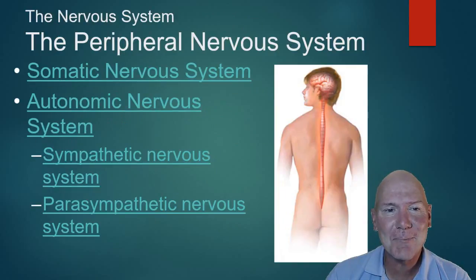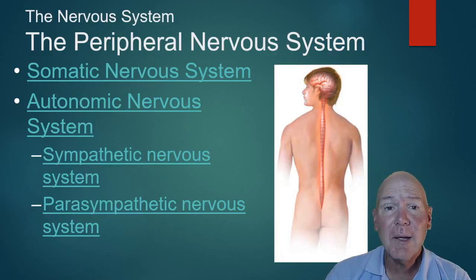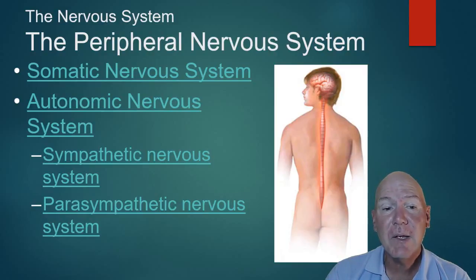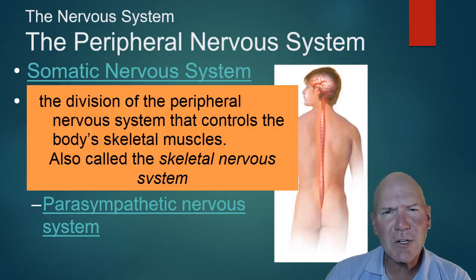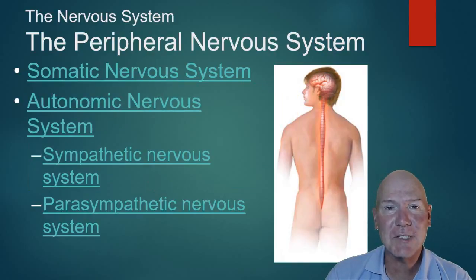Your peripheral nervous system is divided again in that hierarchy. On the right side, your peripheral nervous system continues into two divisions: the somatic nervous system and the autonomic nervous system. Your somatic nervous system is there to control all your voluntary movements — when you tell your arm to move or your toe to wiggle, that's your somatic nervous system.